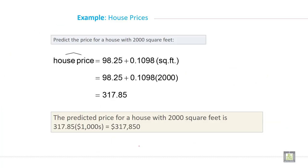Predict the price of a house with 2000 square feet. So this is just multiplied by 2000 square feet and it is 317.85. The predicted price for a house with 2000 square feet is 317.85 into $1,000, which means $317,850, the house price with 2000 square feet.